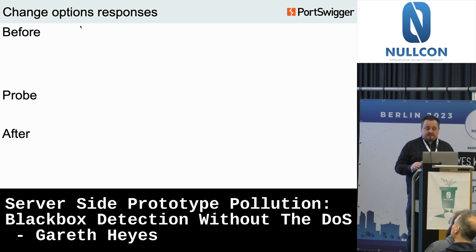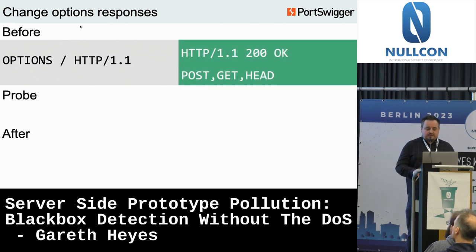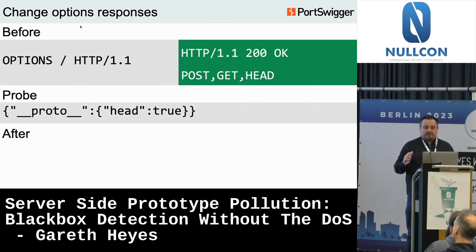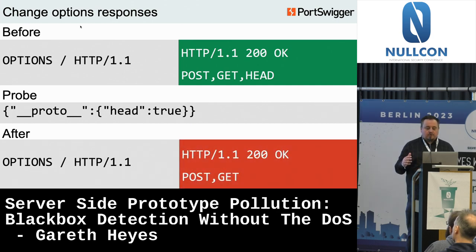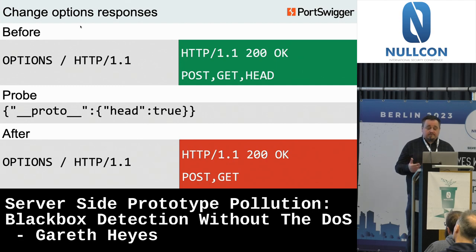The OPTIONS technique: we send an OPTIONS request and get back the allowed methods — POST, GET, and HEAD. If we inject prototype pollution with the 'head' property set to true, Express will ignore the HEAD method. We can use this difference — HEAD method removed — to determine if we've got prototype pollution, and can reset this again to confirm. If this happens, you can be pretty sure you've got prototype pollution.